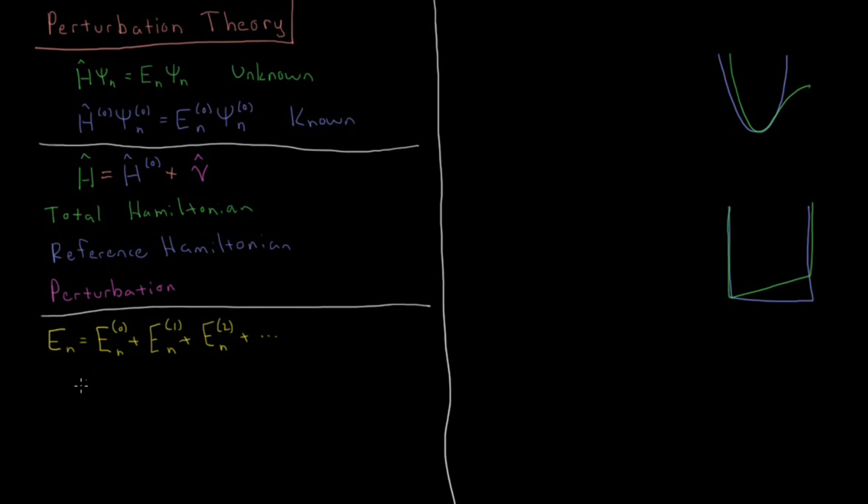And similarly, our wave functions, our psi n's, are going to be successive corrections as well. Psi for the true system is going to be the wave function for the unperturbed system, the reference system, plus successive corrections at varying orders of the perturbation theory.